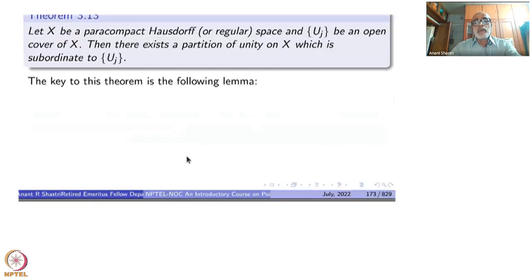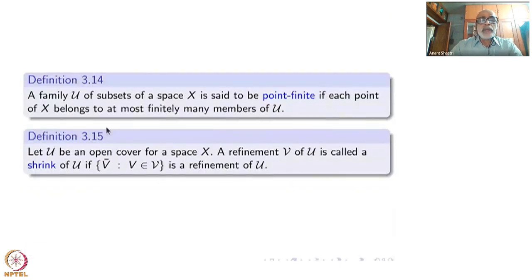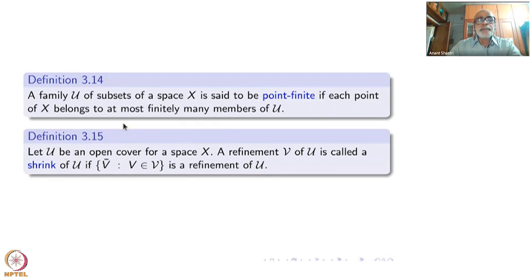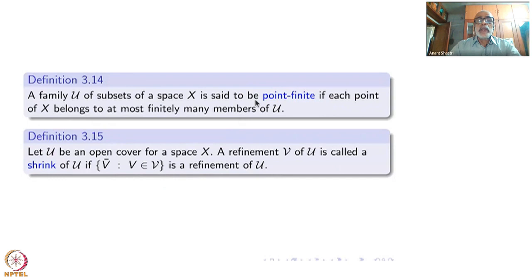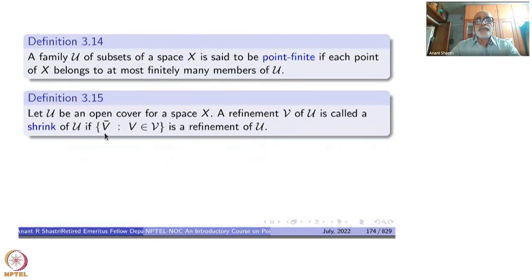The key to this theorem is the following lemma. This is where we are going to use Zorn's theorem. First, the definition: a family of subsets of X is said to be point finite if each point of X belongs to at most finitely many members. A locally finite family will automatically be point finite, but here is a new definition needed to proceed.